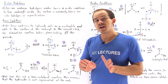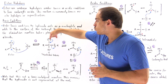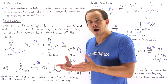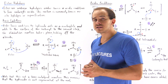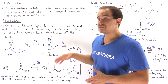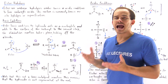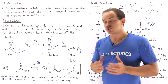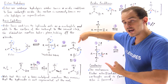Because we are under basic conditions, this reforms our pi bond and eliminates this alkoxide group. Reaction number one is the addition, and reaction number two is our elimination reaction.